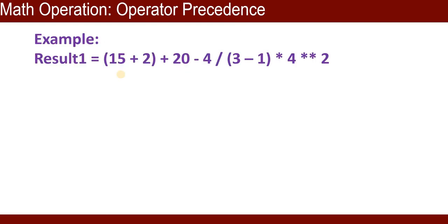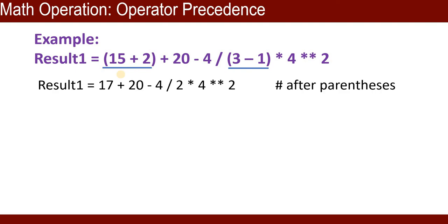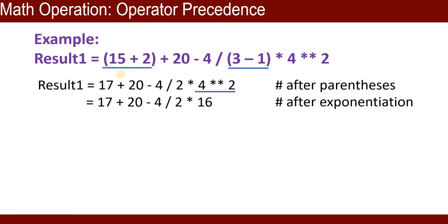One example: result1 equal to (15 plus 2) plus 20 minus 4 divided by (3 minus 1) times 4 raised to power 2. First, we solve the parentheses: 15 plus 2 is 17, and 3 minus 1 is 2. After parentheses, we solve 4 raised to power 2. Double asterisk means power. So we get 17 plus 20 minus 4 divided by 2 times 16.